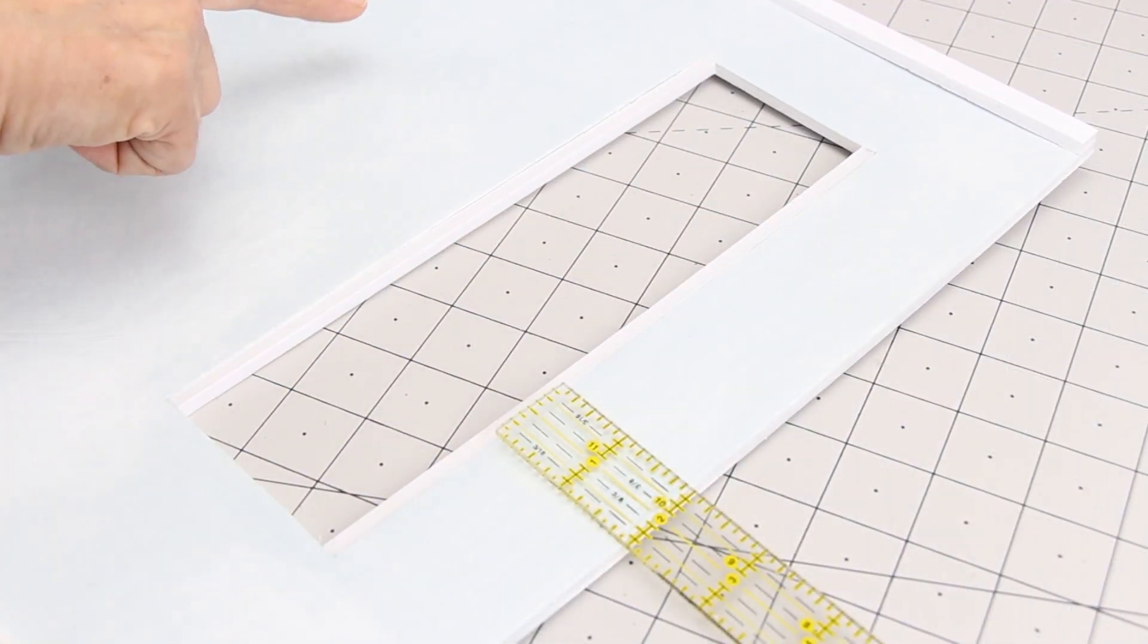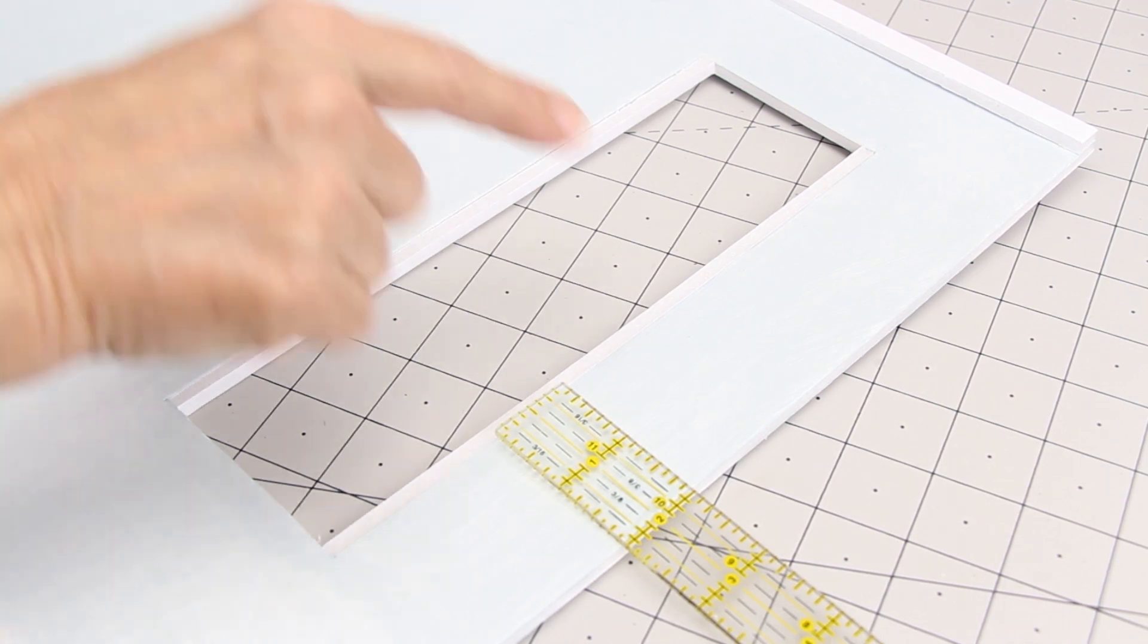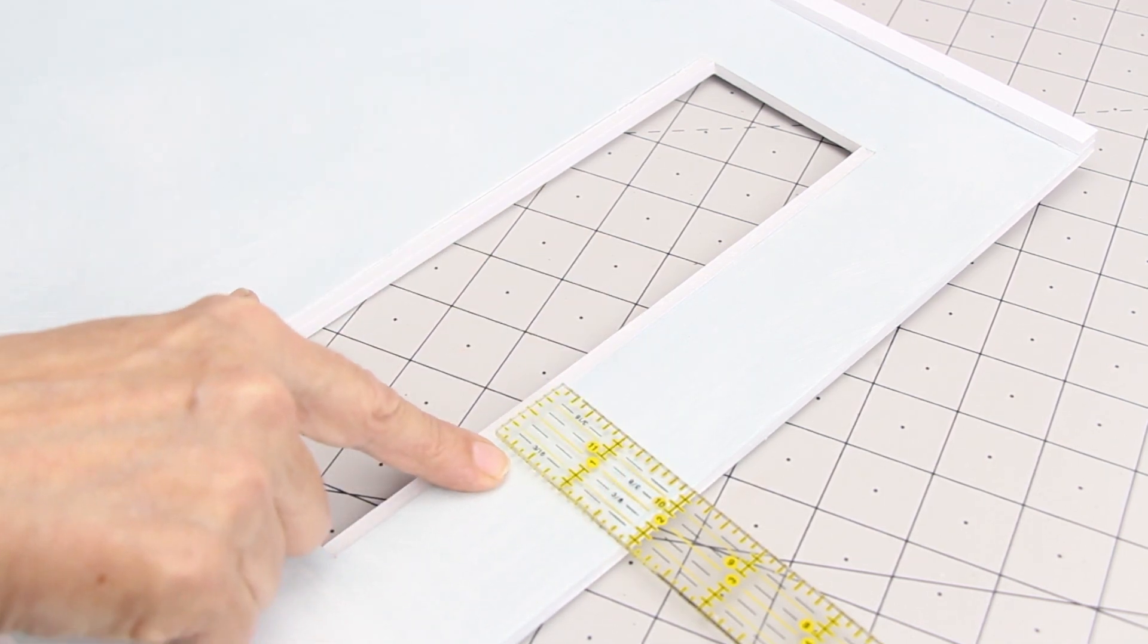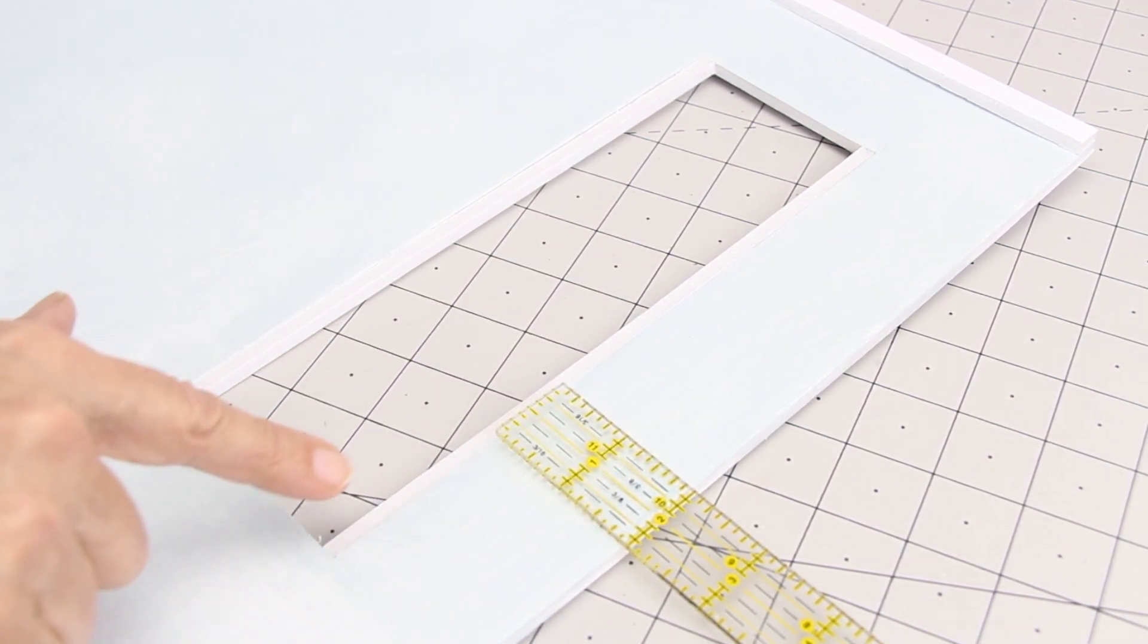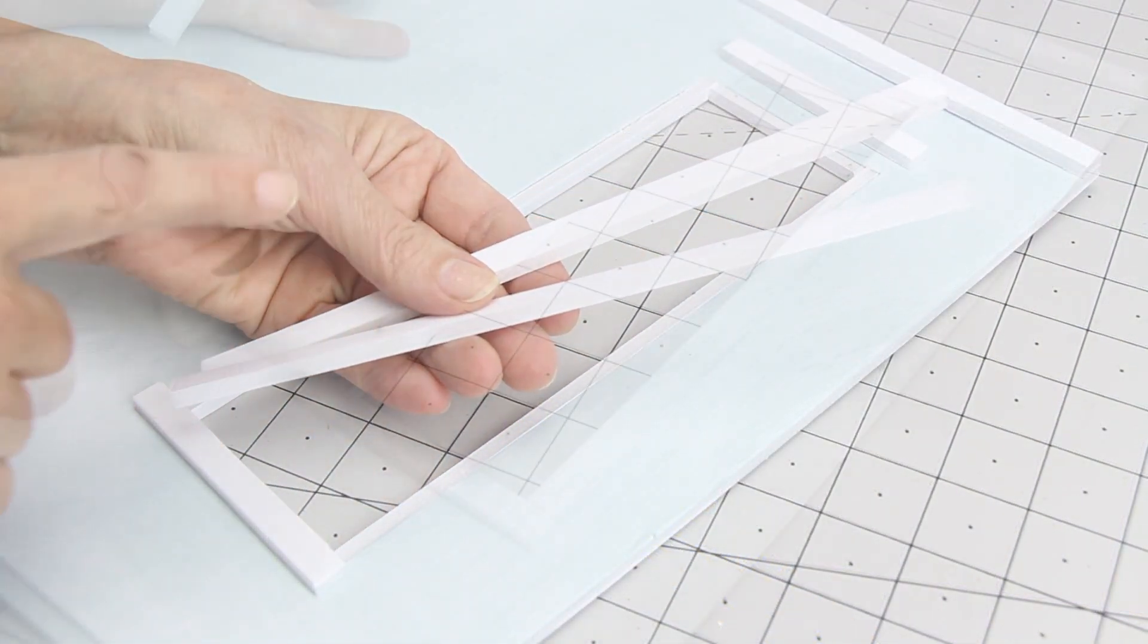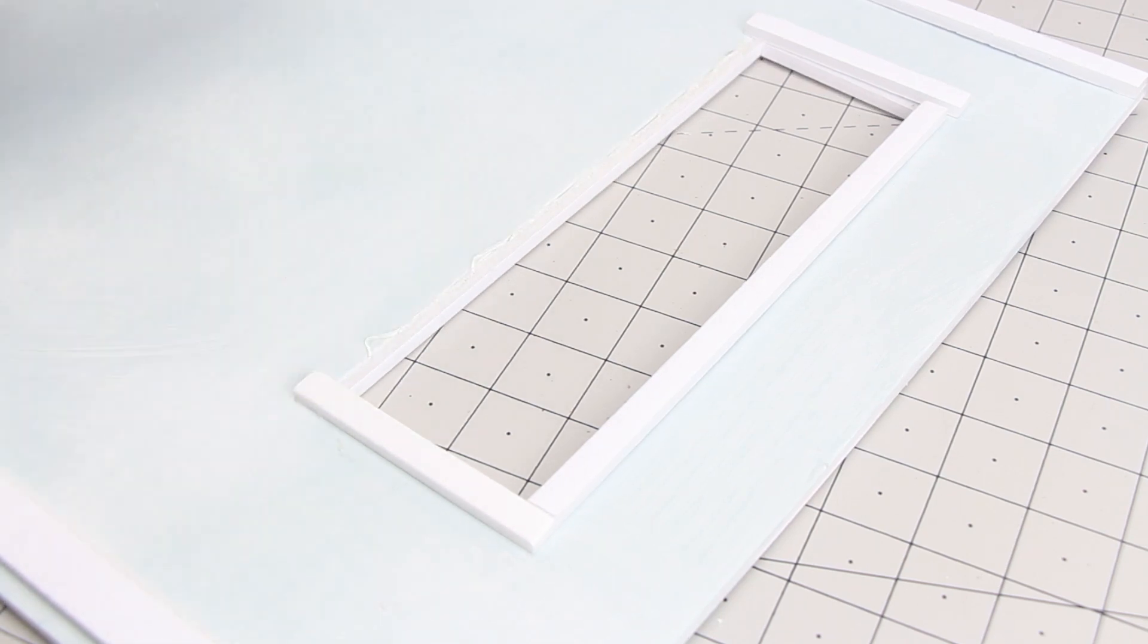On the back wall cut two windows two inches from the edge of the wall. My windows are three inches by nine inches. Cut more three-eighths inch strips and place around the windows.